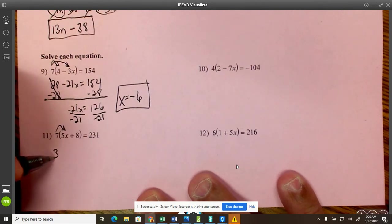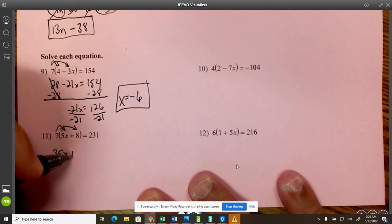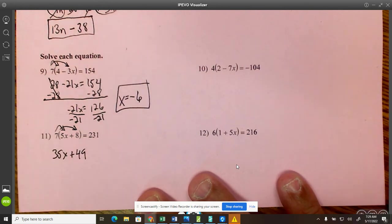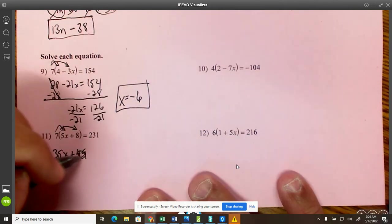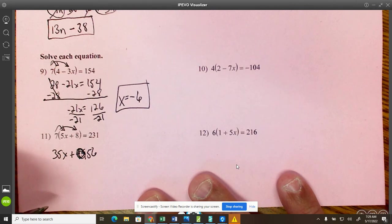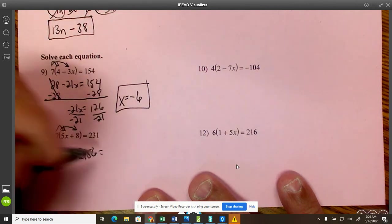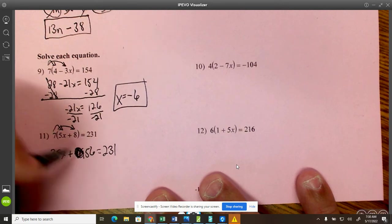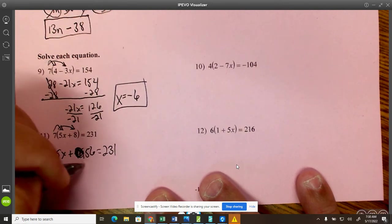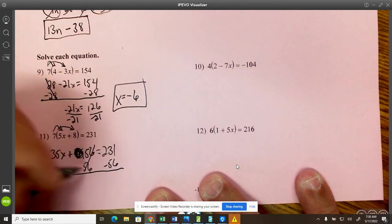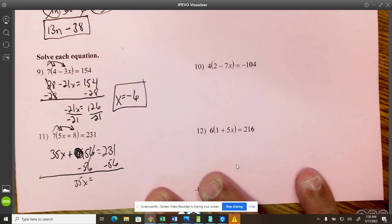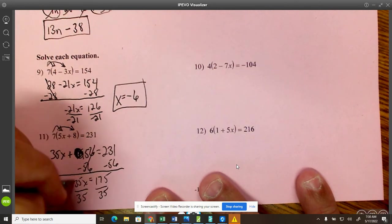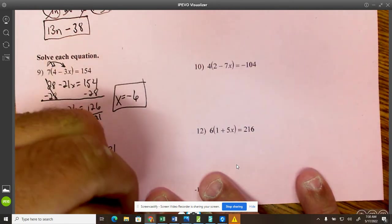7 times 5x, 35x. 7 times 8 is 49. Let me double check that. Sometimes I doubt myself. Sorry. Wrong. 56. I knew something was wrong. Fishy. 7 times 8 is 56. 7 times 7 is 49. It's early. Now, to move this to the other side, to solve it, I'm going to subtract 56 from both sides. 35x equals 175. And divide both sides by 35. So x equals 5.